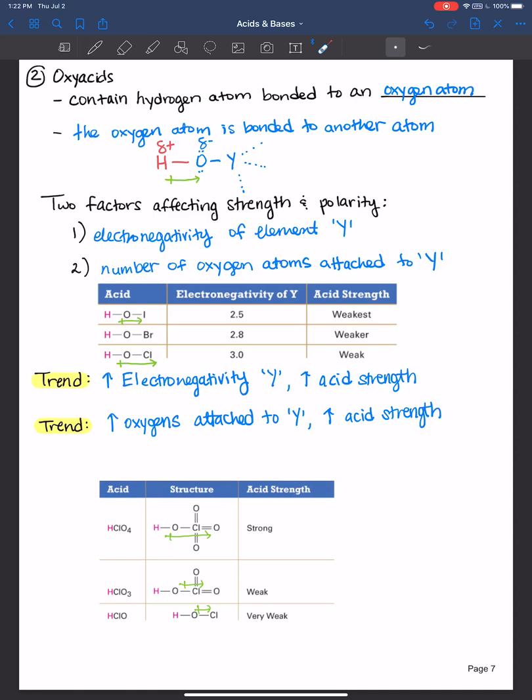All right, so let's go ahead and work a problem together. Based on the molecular structure, let's arrange the oxyacids in order of increasing acid strength and then we'll explain our choice. You can pause the video, try this out on your own to see if you understood what we just covered together, and then come back and check your work.